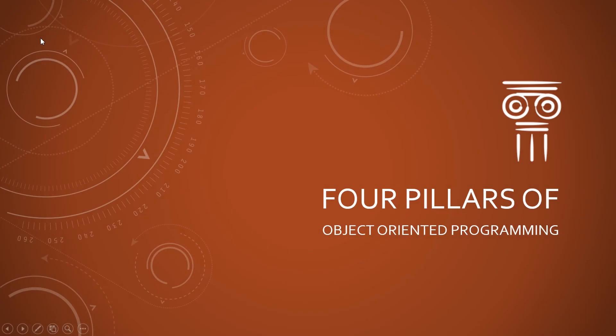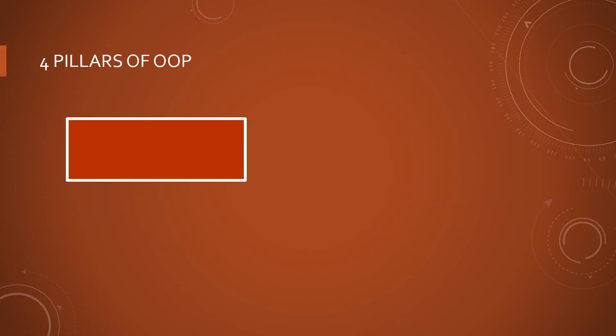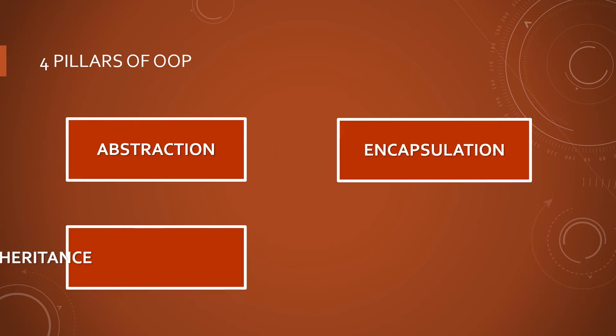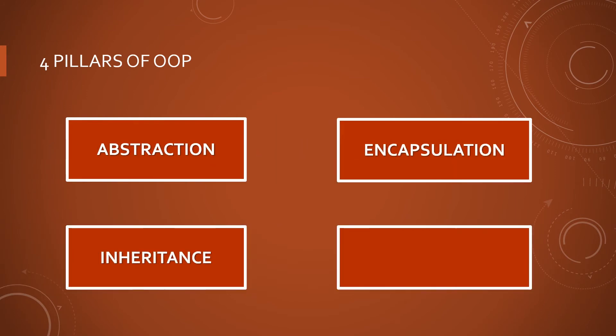There are four major principles that make a language object-oriented. These are abstraction, encapsulation, inheritance, and polymorphism. They are also called the four pillars of object-oriented programming.